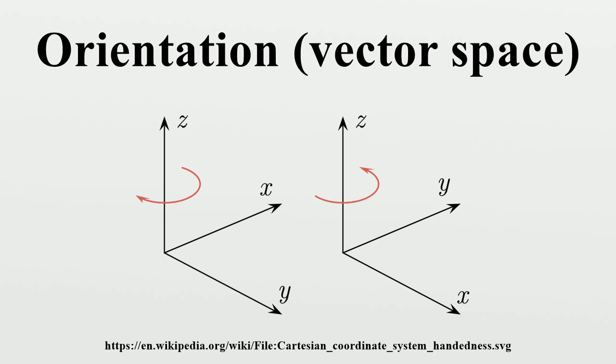Similarly, let A be a non-singular linear mapping of vector space Rn to Rn. This mapping is orientation preserving if its determinant is positive.